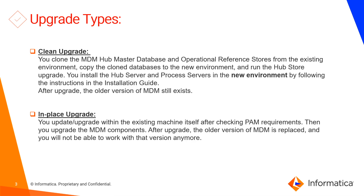For the app server — which is your JBoss, WebLogic, or WebSphere — in a clean upgrade you install the MDM binaries in a new environment and typically install the hub server and process server again. After the upgrade, both your old version (10.3) will still be present in the old environment and the new version in the new environment. It is a combination of both install and upgrade — you're installing the hub and process server freshly but keeping your same ORS or CMX system via a clone.